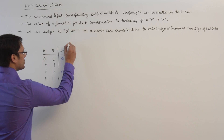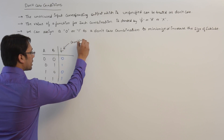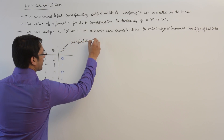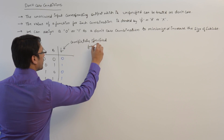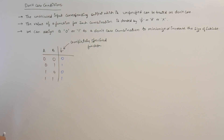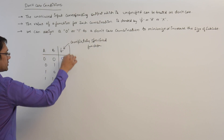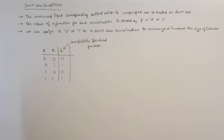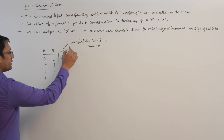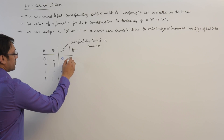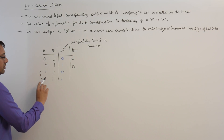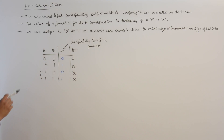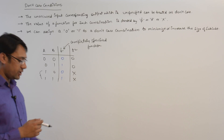Completely specified functions are those where a value is defined for every input combination. But for some functions, if we don't specify values for certain combinations — for example, if we make a function f2 and specify values for 0 0 but not for 1 0 and 1 1 — then such combinations can be denoted by don't care.